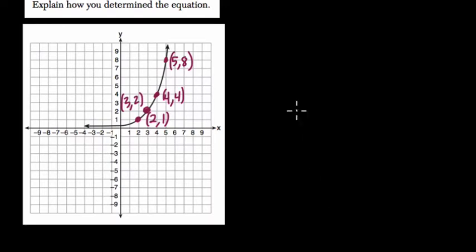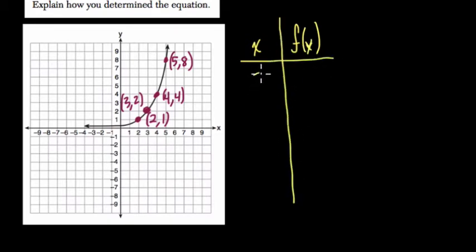So when we're setting this up in a table we want to think about our inputs, x's, the first number in each point, and the output, f of x, or y. Right, so you can say y or f of x, they're both our outputs. We're trying to find the equation that relates to these points, and I'll put them in order: 2 comma 1, 3 comma 2, 4 comma 4, and then 5 comma 8.